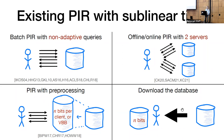Unfortunately, each of these prior approaches comes with limitations. Batch PIR requires the client to make its queries non-adaptively. Offline-online PIR requires the client to communicate with two or more servers, which requires careful coordination between multiple business entities, as security stems from the adversary being unable to corrupt both servers rather than from cryptographic hardness. Known approaches to PIR with preprocessing in the single server setting require the server to store a large encoding — roughly n bits per client — or require virtual black box obfuscation. And if the client downloads the whole database, it must also store the entire database, which is impractical for large databases.